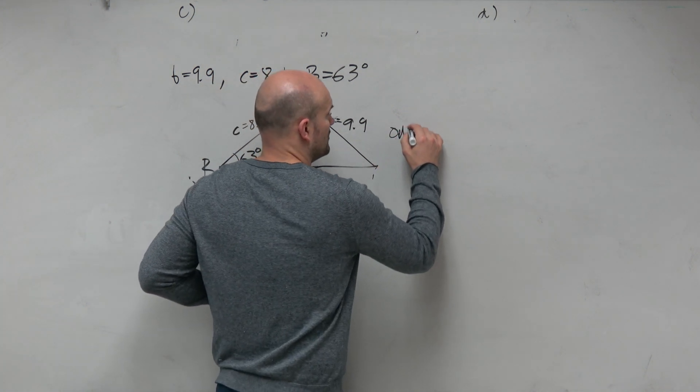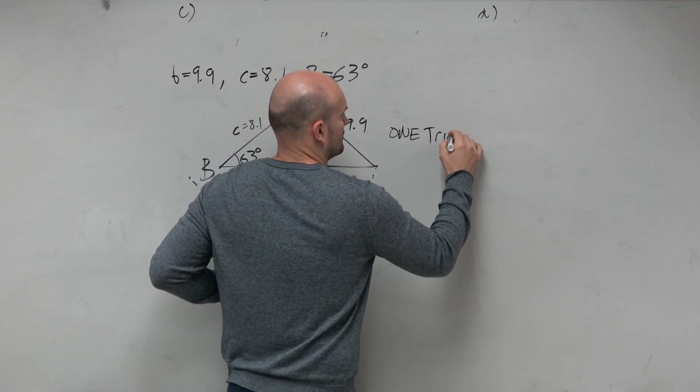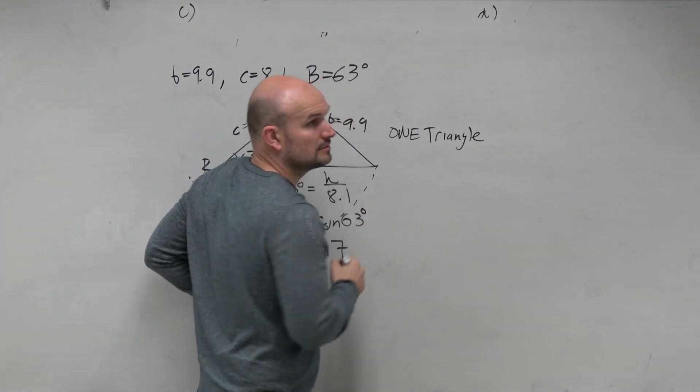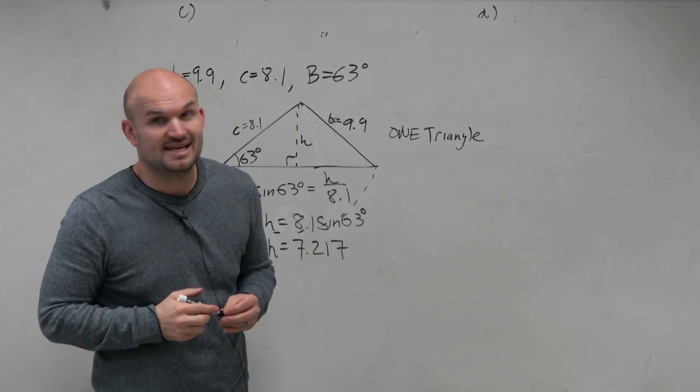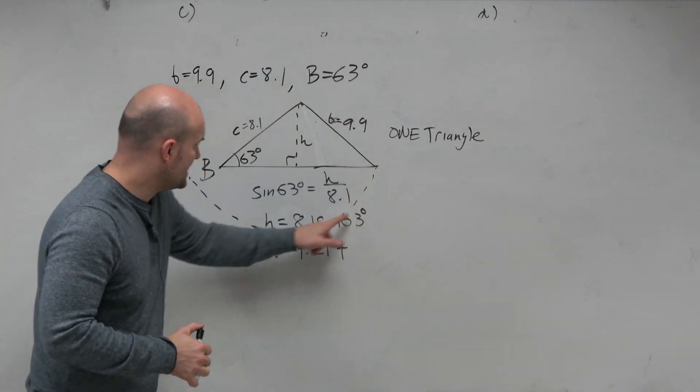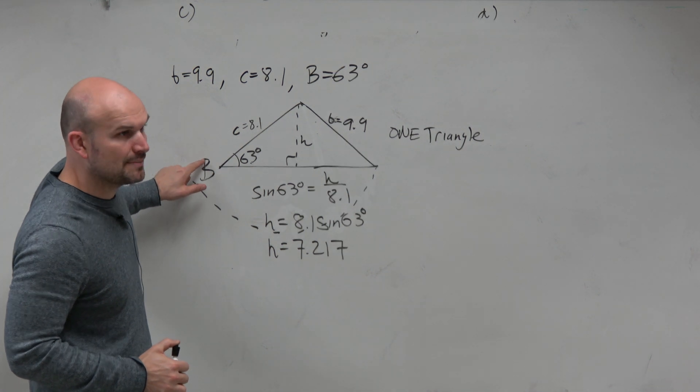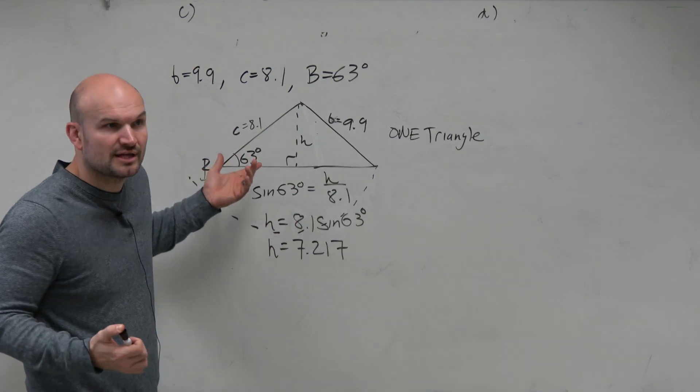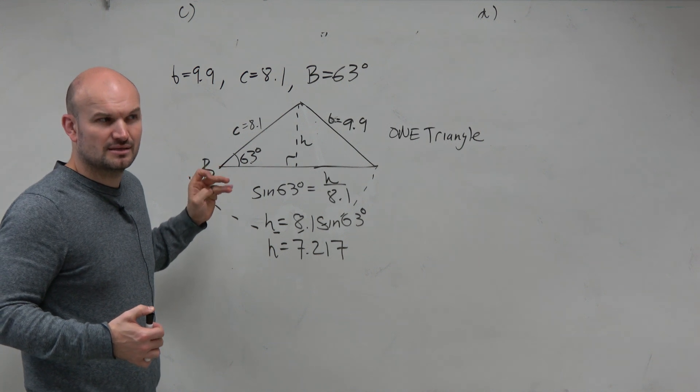So the answer would just be one triangle, not two. It can't create two. Because as you rotate it this way, it's larger than 8.1. So there's never going to be another triangle that happens. Do you see that?